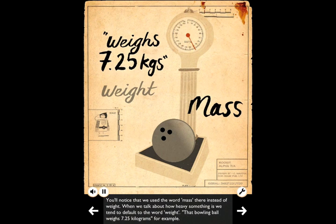You'll notice that we use the word mass there instead of weight. When we talk about how heavy something is, we tend to default to the word weight. That bowling ball weighs 7.25 kilograms, for example.